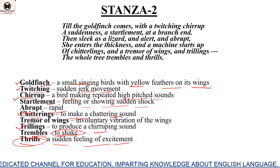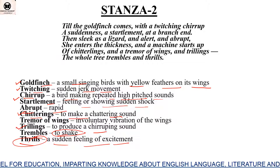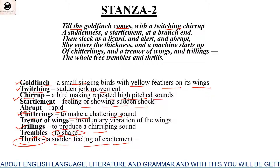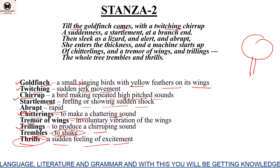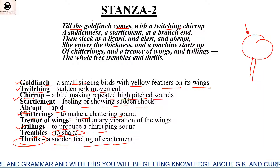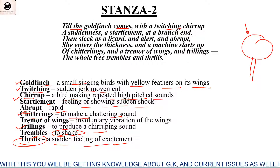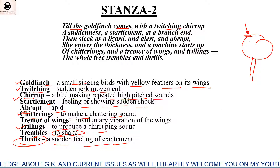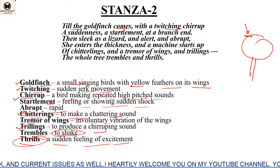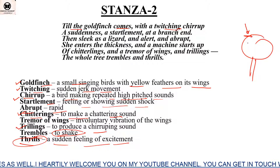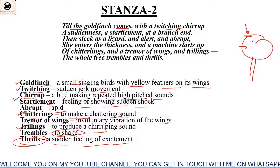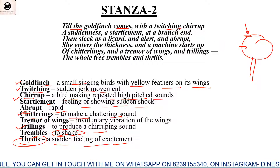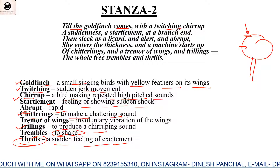'Till the goldfinch comes with a twitching chirrup' — twitching means sudden jerk movement, and the goldfinch bird comes to this tree with that chirrup sound. 'A suddenness, a startlement at a branch end' — at the end of the branch we observe something sudden; it is a complete shock. When the bird arrives on this tree, there is commotion — the leaves start to move and various movements become visible. 'Then slick as a lizard' — with rapid, alert and abrupt movement.